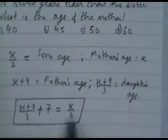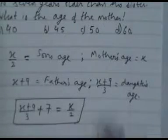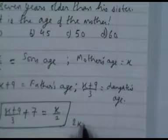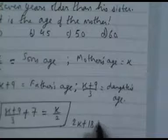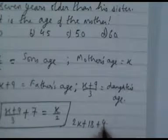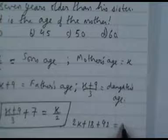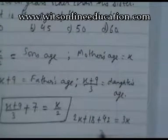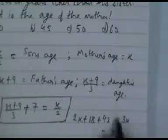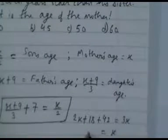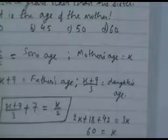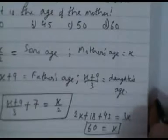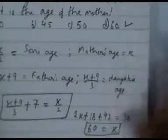Solving: 2X + 60 = 3X, so X = 60. The mother's age is 60 years. Option D is correct.